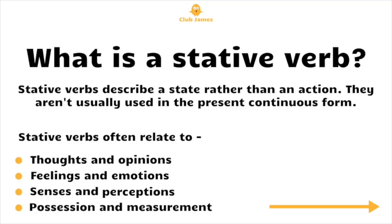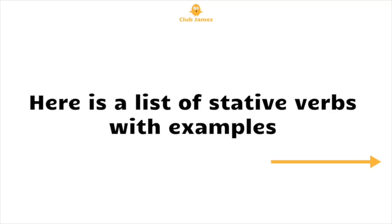What is a stative verb? Stative verbs describe a state rather than an action. They aren't usually used in the present continuous form. Stative verbs often relate to thoughts and opinions, feelings and emotions, senses and perceptions, possession and measurement. Here is a list of stative verbs with examples.